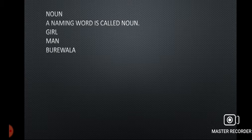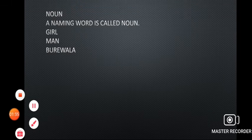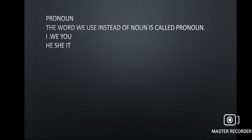First of all we have Noun. A naming word is called a noun. کسی بھی چیز کا جو نام رکھتا ہے اس کو ہم noun کہیں گے — چاہے وہ انسان ہو، شہر ہو، جانور ہو، یا ملک ہو۔ For example: girl, man, city, Burewala. Students, there are many kinds of noun which we will discuss in coming lectures, such as abstract noun, concrete noun, material noun, and collective noun.